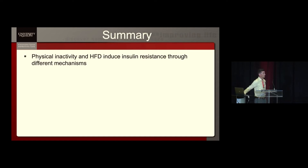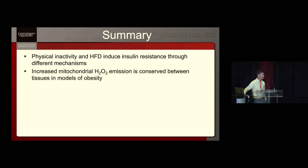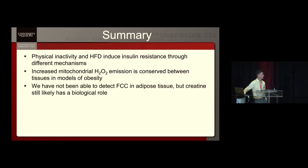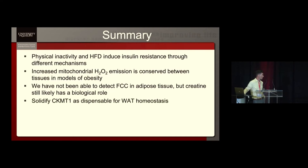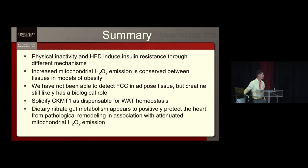So to summarize: physical inactivity and a high-fat diet induce insulin resistance through slightly different mechanisms, and obviously being physically inactive and consuming a high-fat diet would be even worse than either one independently. Mitochondrial reactive oxygen species seem to be conserved between tissues and models of obesity. We have not been able to detect the futile creatine cycling in adipose tissue, but creatine still likely has a biological role because when we knock down those creatine kinase genes, we see consistently that submaximal respiration is increased. Our data solidifies that CKMT1 at least is dispensable for white adipose tissue homeostasis. And dietary nitrate seems to be affecting the gut metabolism in some way to influence whole body health, so it can't be as simple as blood pressure control.